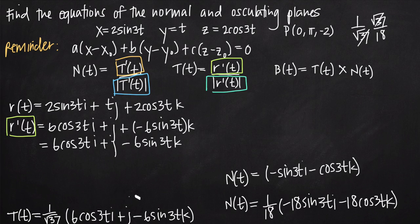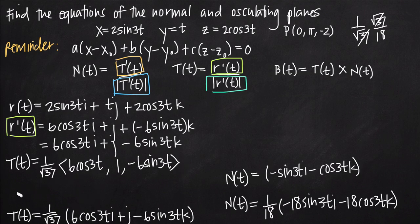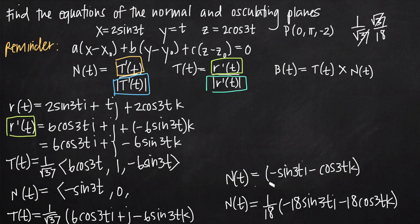To give ourselves some room, let's rewrite the unit tangent and unit normal vectors using just their components — removing i, j, and k. For the unit tangent vector: (1/√37) times ⟨6 cos(3t), 1, −6 sin(3t)⟩. For the unit normal vector: ⟨−sin(3t), 0, −cos(3t)⟩.